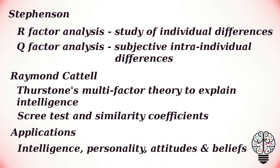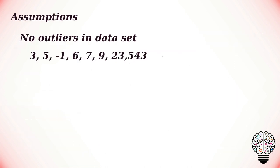Let us now look at some of the assumptions. The first one is no outliers are present in the data set, that means no extreme data are present in the data set. For example, consider the following values: 3, 5, -1, 6, 7, 9, 23,543. The last value is an outlier that overwhelms the entire data, so most of our data sets will not include outliers. The next one is that adequate sample size must be present. This means that you must have more variables than you have factors.